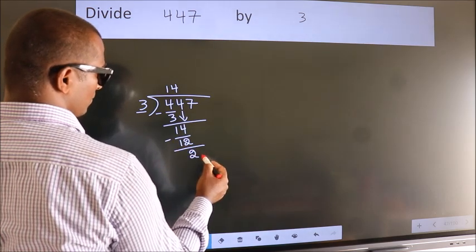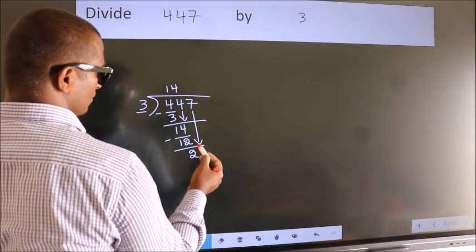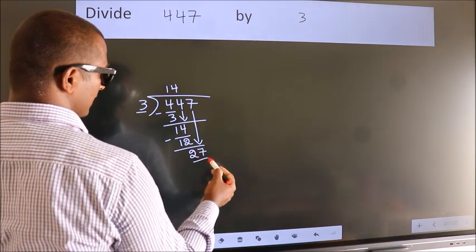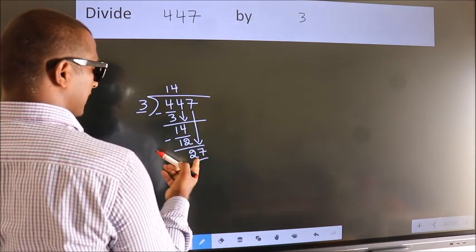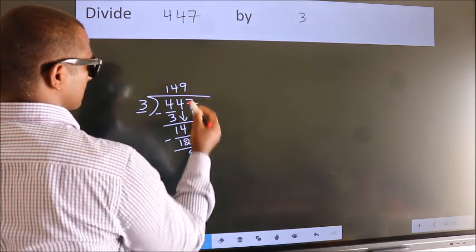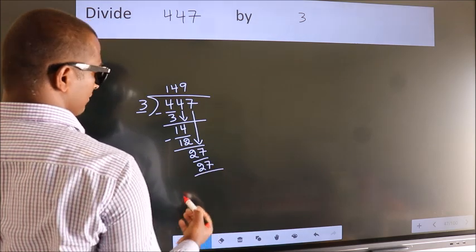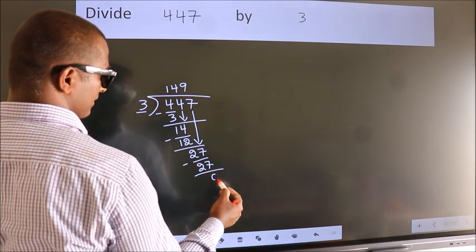After this, bring down the beside number. So, 7 down. So, 27. When do we get 27? In 3 table, 3 nines 27. Now, we subtract. We get 0.